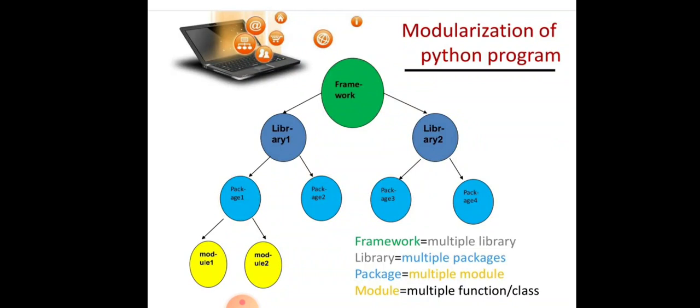So frameworks are the collection of multiple libraries. Library is a collection of modules or we can say that collection of multiple packages. Packages are the collection of multiple modules and modules are the collection of multiple functions or classes.